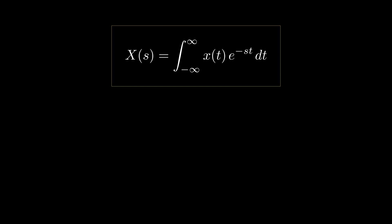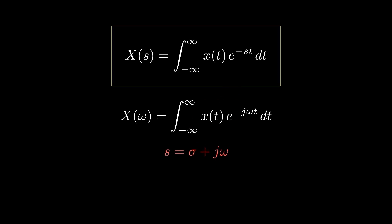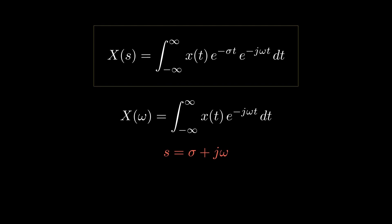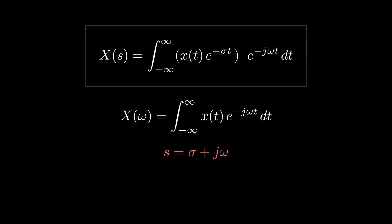That's all about Fourier transform. How about Laplace? If you look at the formula of the Laplace transform, it looks exactly the same as Fourier, but instead of j omega, there is S in the exponential function. S is a complex quantity consisting of real and imaginary parts, sigma and j omega. By expanding S, you can easily see that the Laplace transform is the Fourier transform multiplied by a factor, e to the minus sigma t.